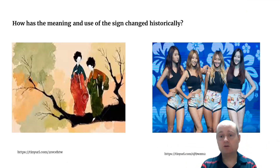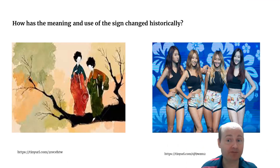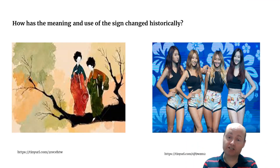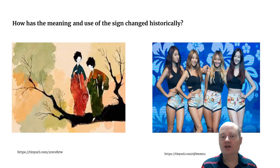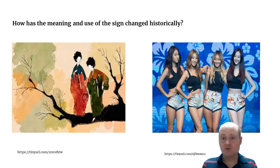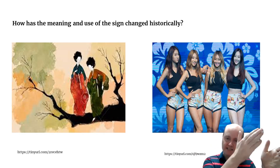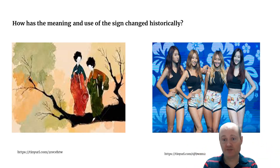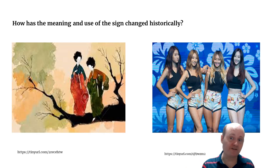We can also look at how particular images are used and how their meaning has changed historically. For example, the form representing a woman has changed enormously over time. A social semiotician might ask: how has the meaning changed? What are the social conditions that enabled it to change? What is the difference in the representation in the first versus the second image? Many small changes, media shifts, and societal transformations took place between them.